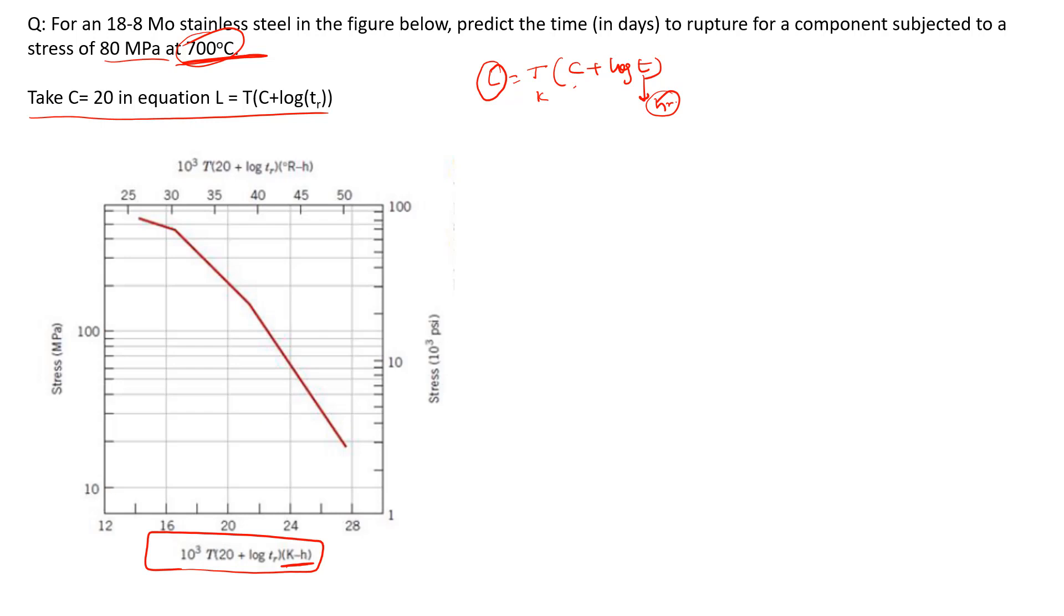We can see the graph is logarithmic scale: 10, 20, 30, 40, 50, 60, 80. At 80 MPa stress, if you drop down from the curve, it comes close to 23. So we will take the value 23.